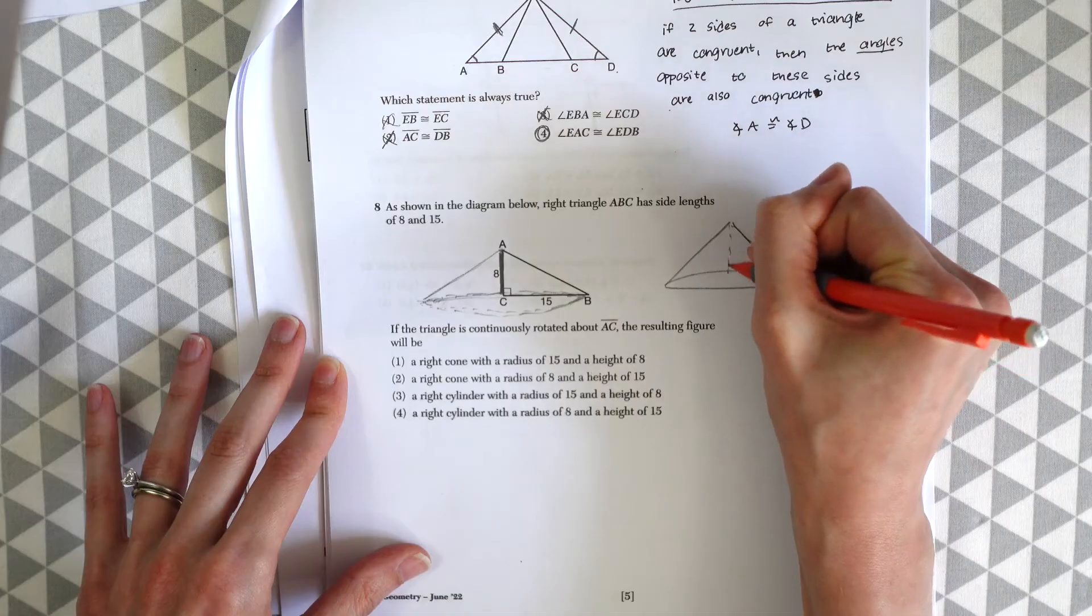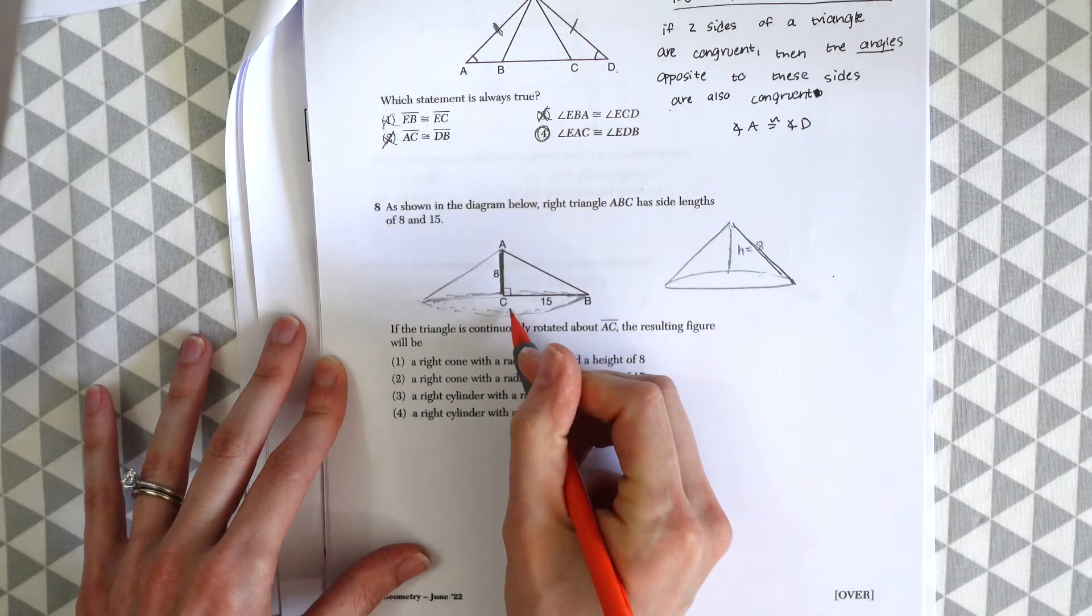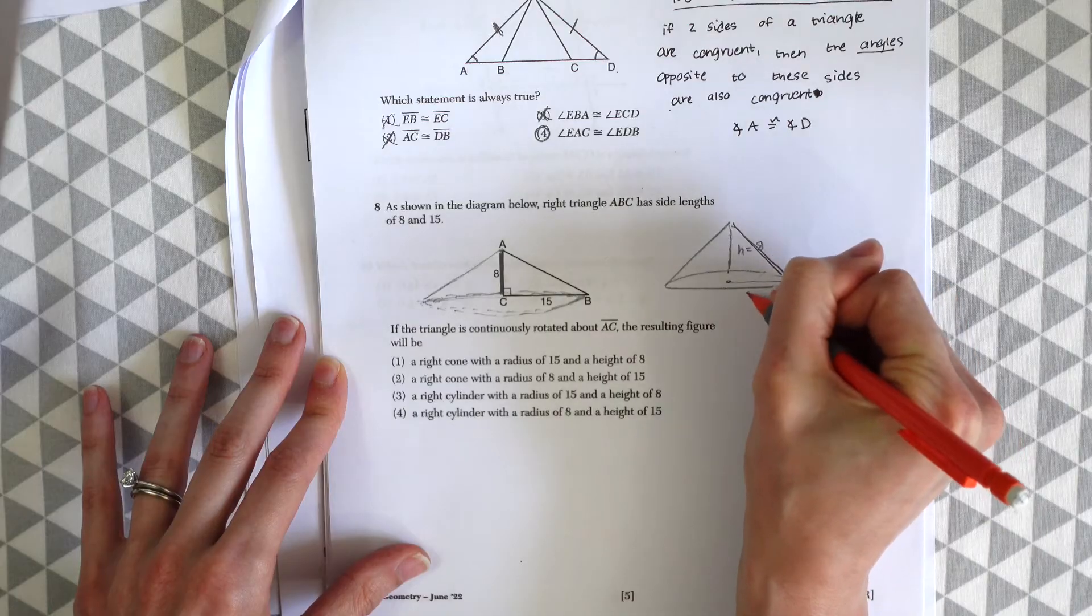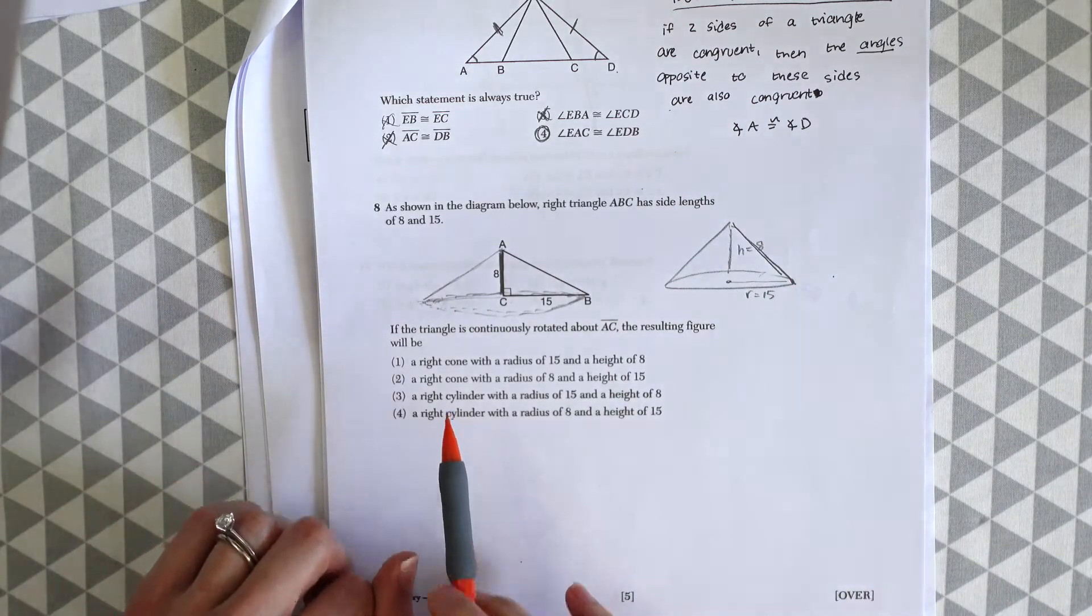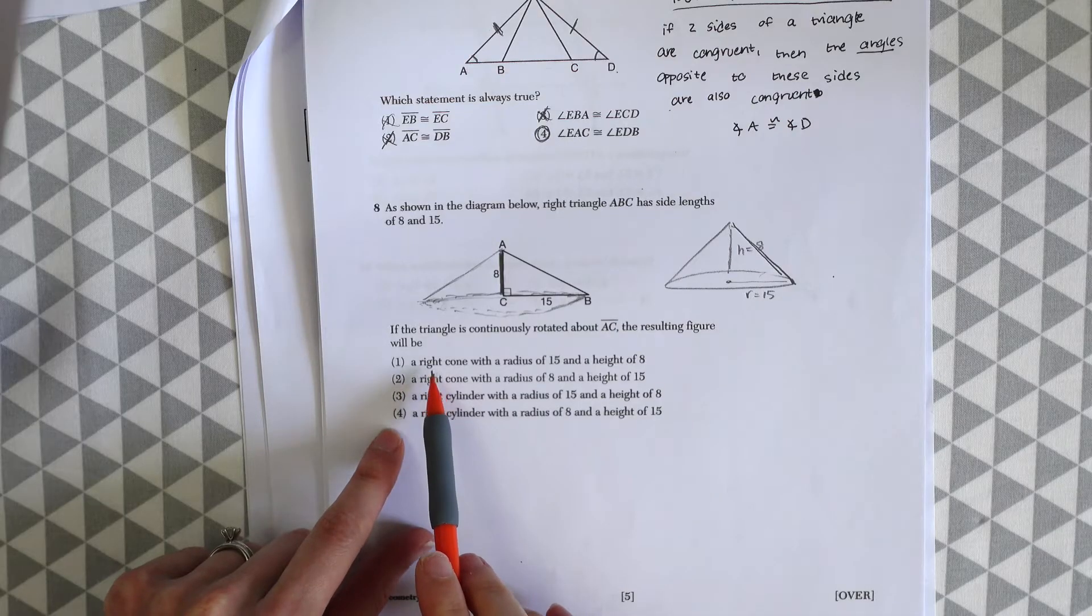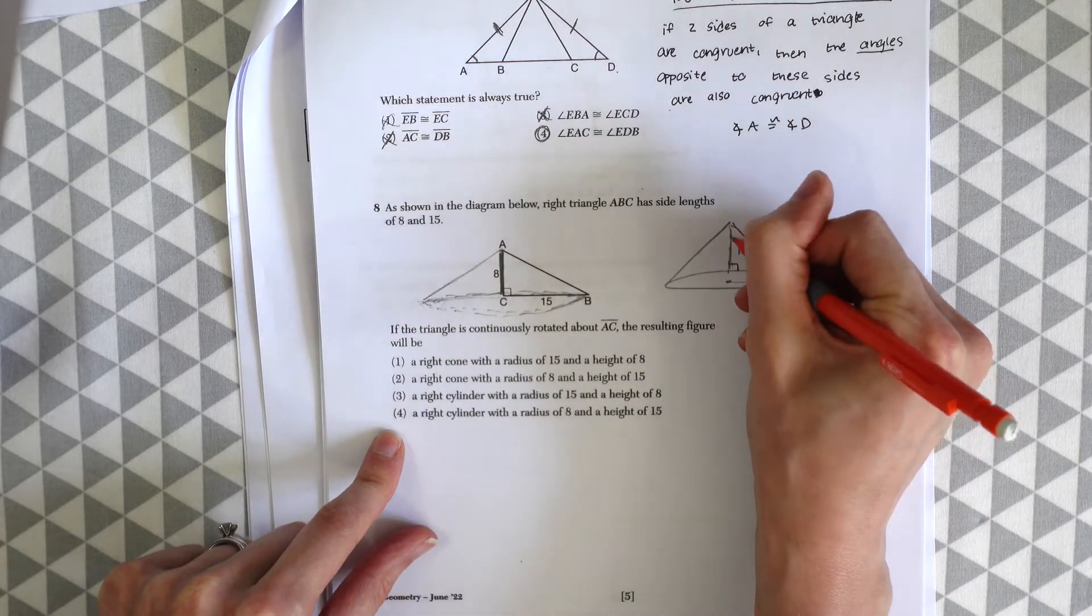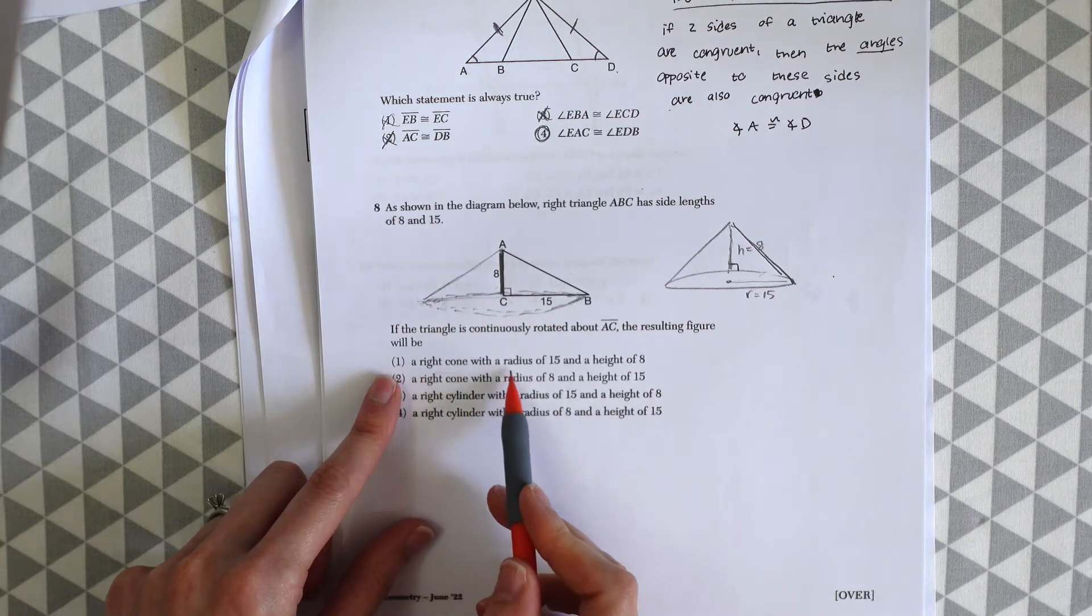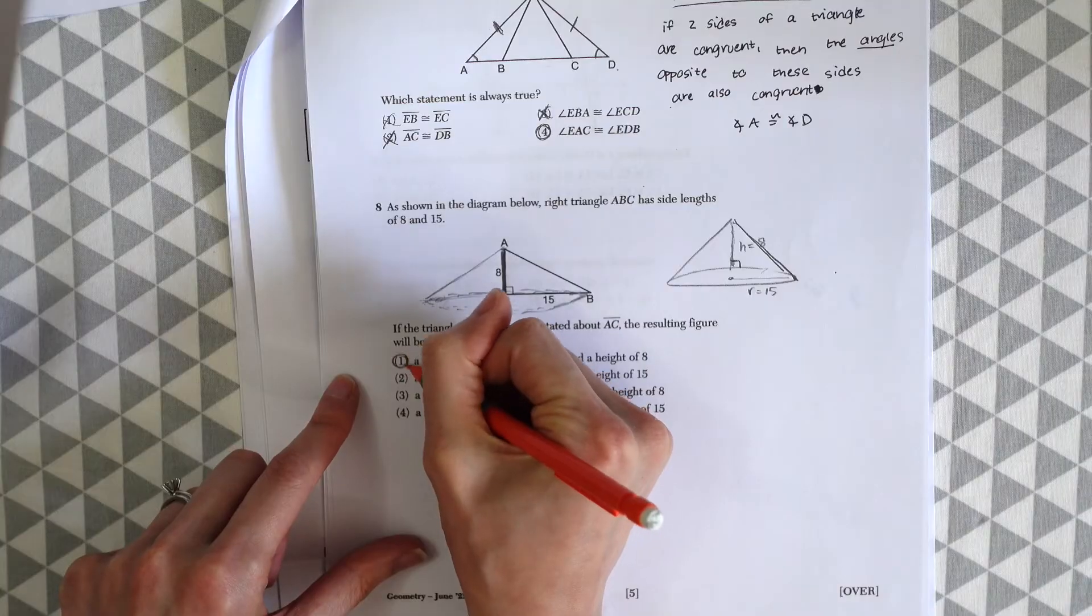Where the height is what they already gave us. Where the height is 8 and it has a diameter of 30 and a radius of 15. So now we just need to look for that in the answer choices. So if you look at choice one, it actually gives us the right answer right away. It says a right cone. So this is a right cone because it has a right angle in its core inside. A right cone with a radius of 15 and a height of 8. So we know that this is our answer choice one.